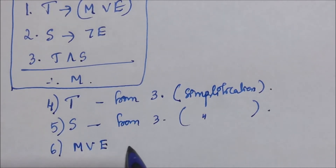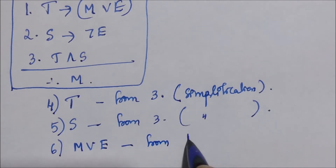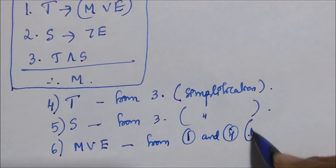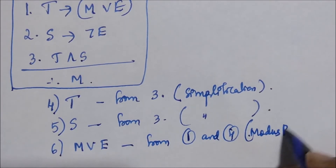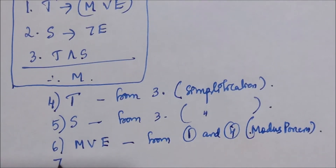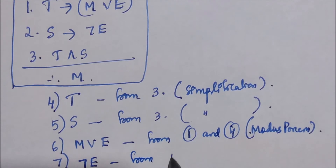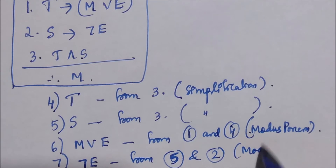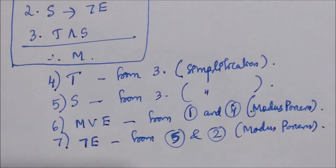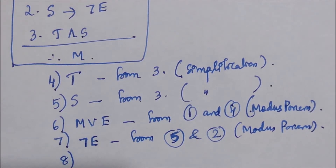The sixth statement is M or E. From the first statement we know T implies M or E, and the fourth statement says T has happened, so M or E must happen — that is the rule of modus ponens. The seventh statement is not E. We know from the second statement that S implies not E is true, and the fifth statement says S is true, so not E has to be true — rule of modus ponens.